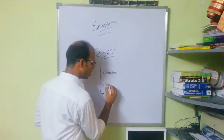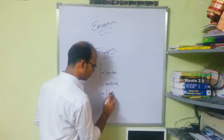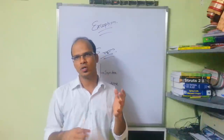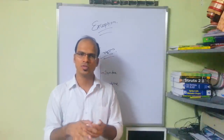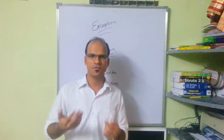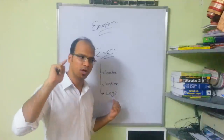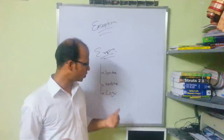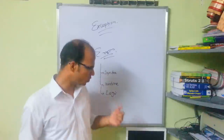Then we have something called a runtime error, and then we have a logical error. A logical error is something like: when you compile your code it works fine, but when you run your code and give some input — like 2 plus 2 — you expect 4, but if you're getting 5, that's a logical error. You are getting output, but the wrong output. Syntax error is a spelling mistake; logical error is a wrong logic.